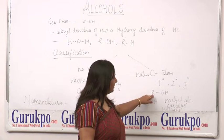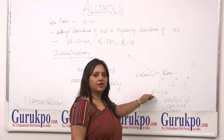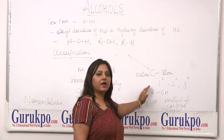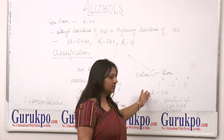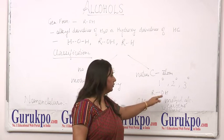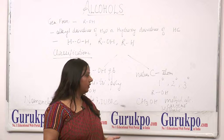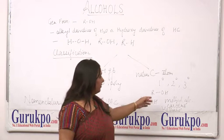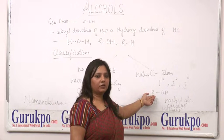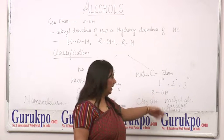Taking the example of ROH — here, only a single alkyl group is present, which is why it is called a primary alcohol. If instead there are two alkyl groups attached to the OH, then it will be called a secondary alcohol. And if more than two or three alkyl groups are present, then it will be called a tertiary alcohol.